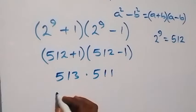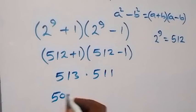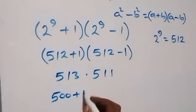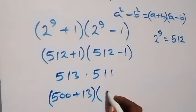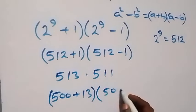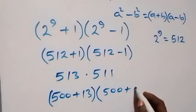This will be written as 500 plus 13. Put this in bracket, times. Here we have 500 plus 11.